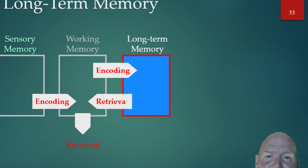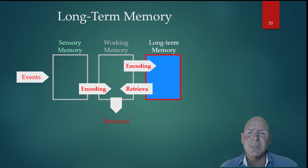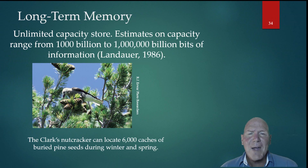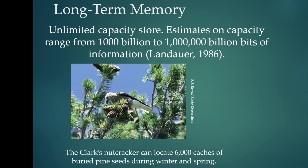Now on to long-term memory — this is probably where we ultimately want things. However, a lot of things we only need in working memory, so there's no reason to store everything into long-term memory. Our long-term memory has an unlimited store — its capacity is huge, in fact we consider it to be essentially limitless. So don't worry about learning too many things; there's room in there. Look at Clark's Nutcracker — it remembers 6,000 caches of buried pine seeds during the winter and spring. Hopefully you can remember that many vocabulary terms.